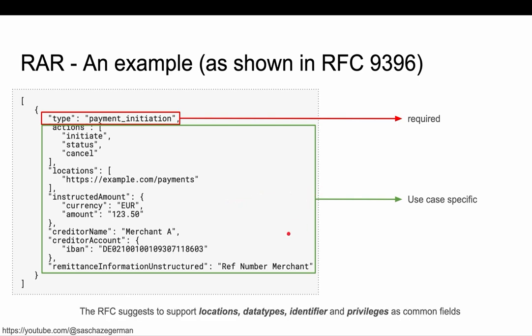The spec suggests that keys like locations — which we have in this example here, referring to a resource server that will handle payments in this case — as well as data types, identifier, and privileges are common fields, even though they are not in this example. The idea is that many use cases will need to take these keys into consideration for their payload, as they seem to be very typical. But other than that, the design and structure of this document is totally up to the use case.